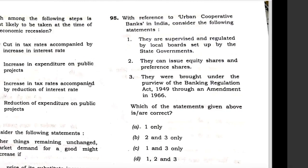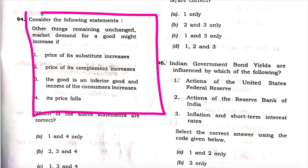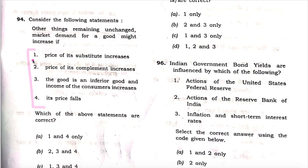Next question: Consider the following statements. The market demand for a good might increase if — four options are given. If the price of its substitute increases, it is correct. If the price of its complement increases, this is wrong. If the good is an inferior good and income of the consumer increases, it is wrong. If the price falls, it is correct. Therefore, one and four are correct.